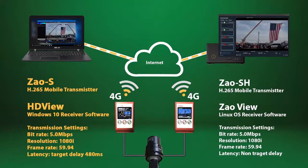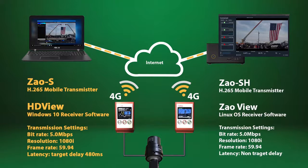The Zao S is our most popular H.265 mobile transmitter, with its Windows 10 receiver software HDView. The transmission settings are: bitrate 5Mbps, resolution 1080i, frame rate 59.94.